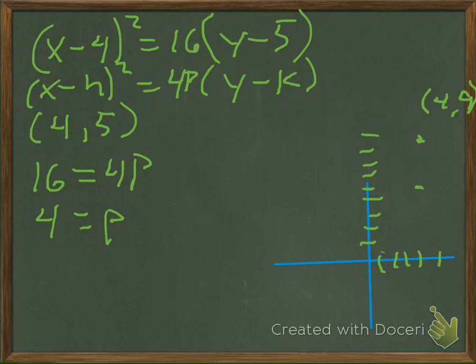We're also going to go down 4 from there, and this is going to be my directrix. That equation is y is equal to 1. Because we subtract 4 from the y value, because it's a parabola opening up and down. So now it's time to draw our parabola.